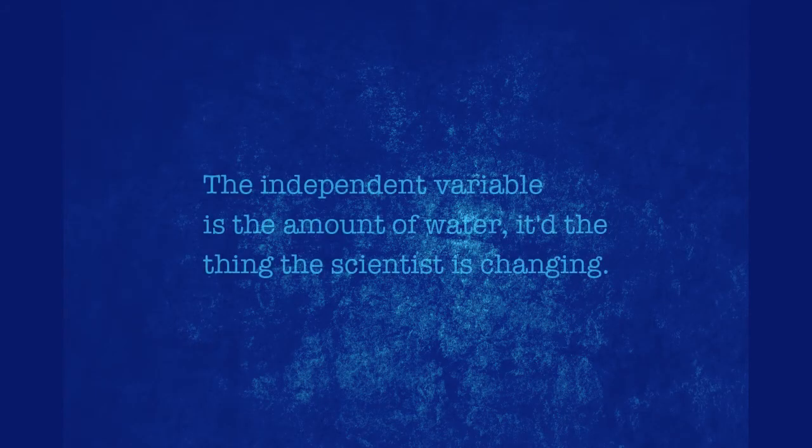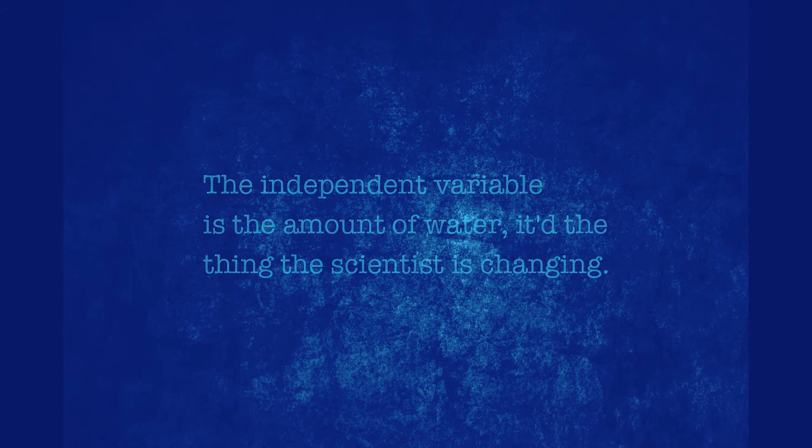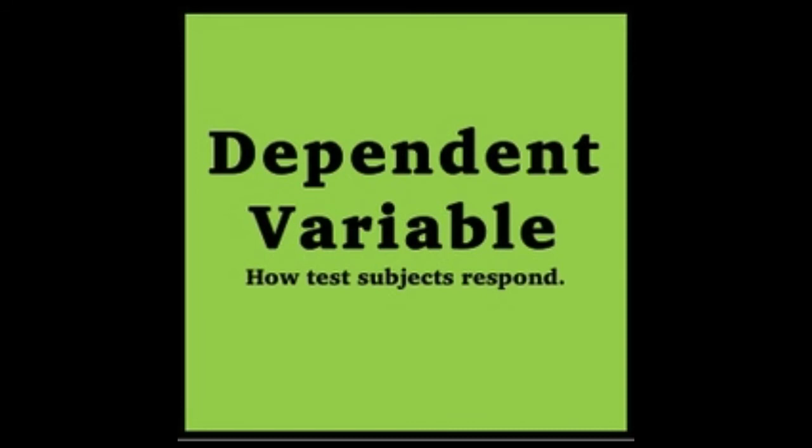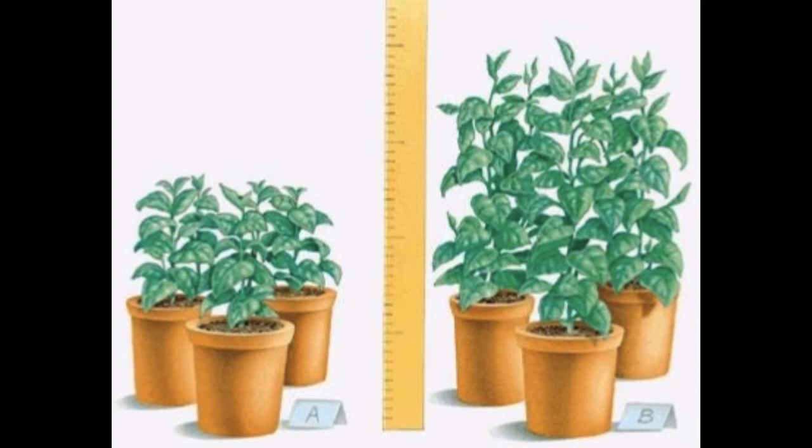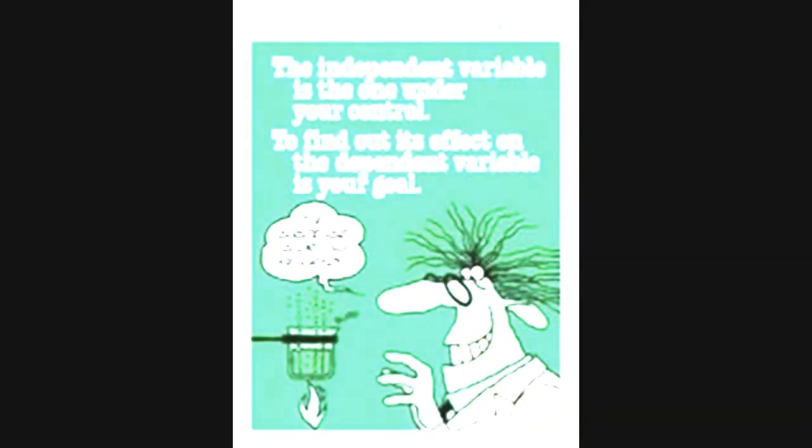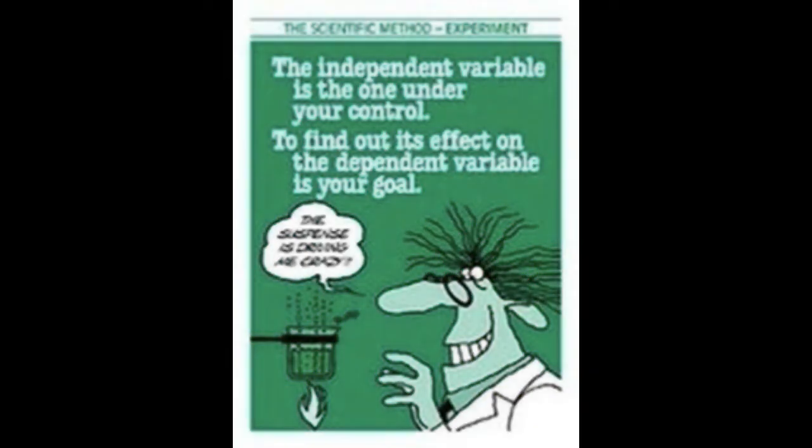The dependent variable is what depends upon that amount of water. So the dependent variable is what the scientist focuses on to see how the change to the independent variable is responded to. In other words, the new value of the dependent variable is caused by and depends on the value of the independent variable.